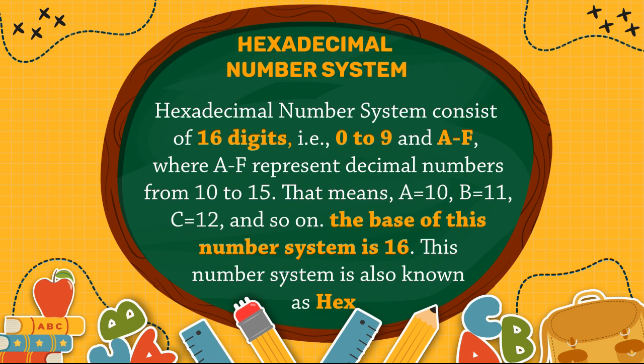The fourth one is hexadecimal number system. This number system consists of 16 digits: numbers from 0 to 9 and letters from A to F, where A to F represent decimal numbers from 10 to 15. That means A is equal to 10, B is equal to 11, C is equal to 12, and so on. The base of this number system is 16.